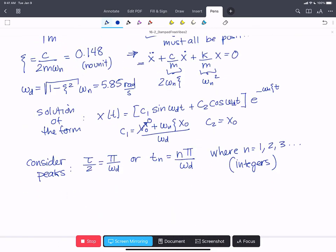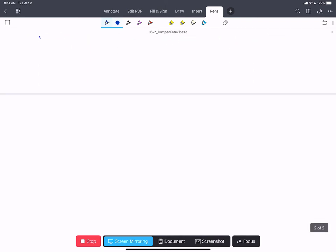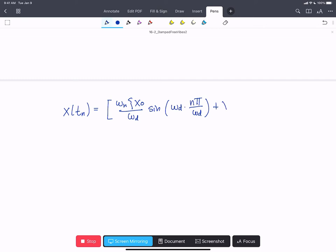So now we have the solution that describes how our system moves, what its position is at any point, and we know the points that we want to target, the tn values. So we're going to put those together. We can say that x at tn is going to be equal to omega n zeta x naught over omega d times sine omega d times n pi over omega d plus x naught cos omega d times n pi over omega d all times e to the minus omega n zeta n pi over omega d.